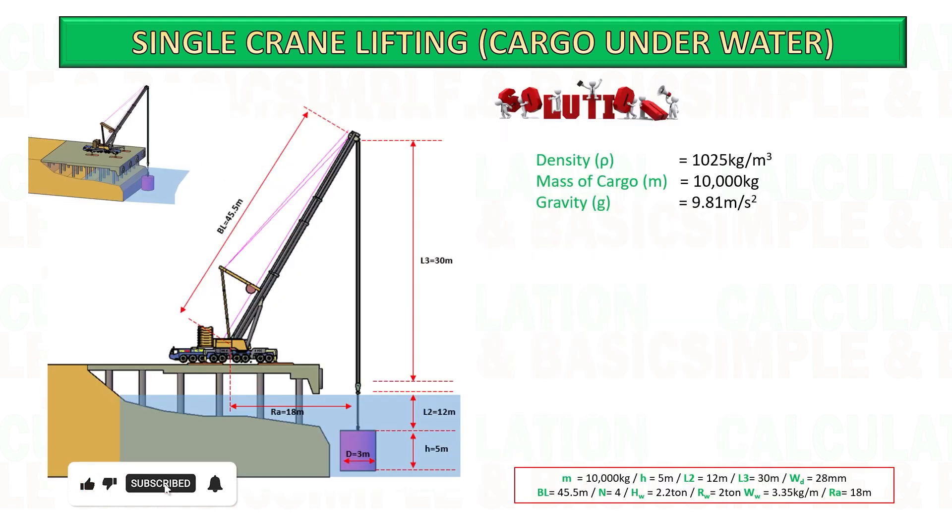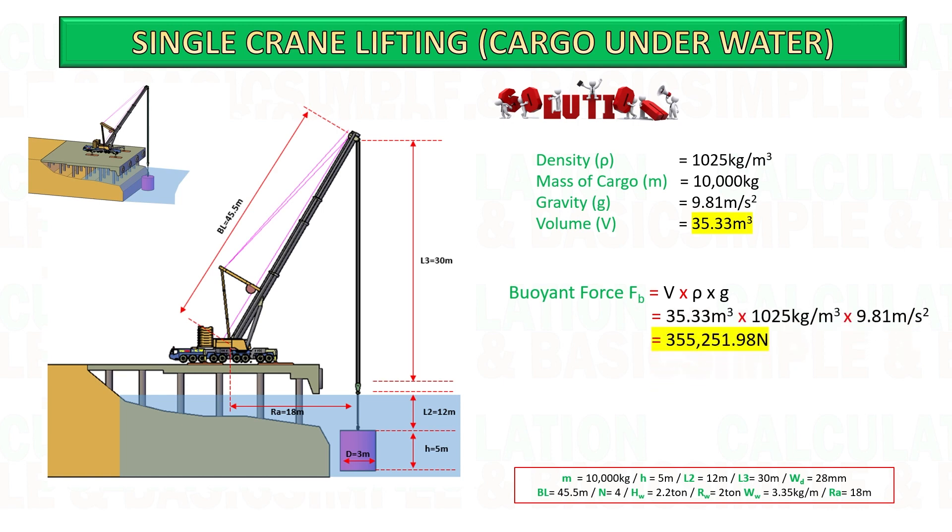After getting the volume of the cylinder, substitute this value into the formula of buoyant force. There is an upward force on any object in any fluid. The buoyant force is always present, whether the object floats, sinks, or is suspended in a fluid.